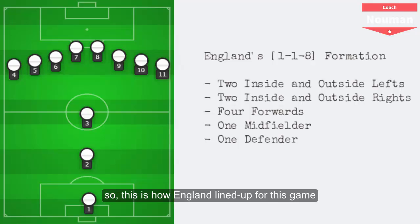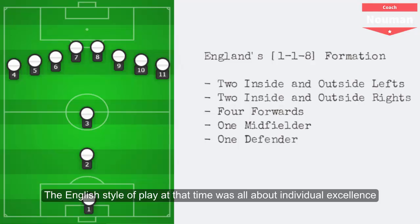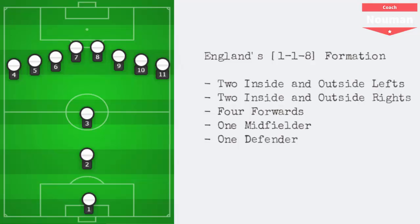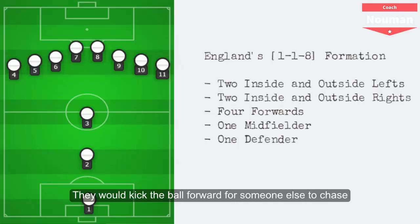This is how England lined up for this game: a 1-1-8 formation with one defender picking up the loose balls, one midfielder and eight attacking players. The English style of play at that time was all about individual excellence and they were renowned for their dribbling. Players would try to take the ball forward as far as possible and only when they could not proceed any further, they would kick the ball forward for someone else to chase.